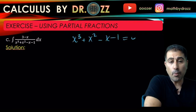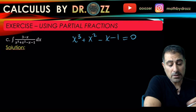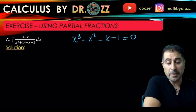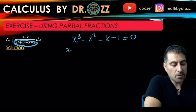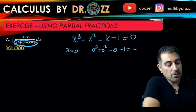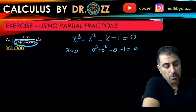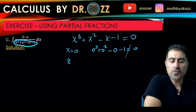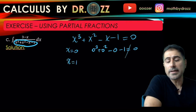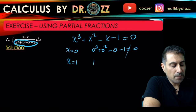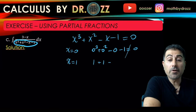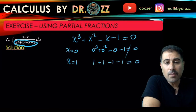For x cubed plus x squared minus x minus one, I'm trying to find one root or zero of this equation, which will tell me one factor of the cubic. Let's try x equals zero: zero cubed plus zero squared minus zero minus one equals negative one, which is not zero. Let's try x equals one: one plus one minus one minus one equals zero. So x equals one is a root.